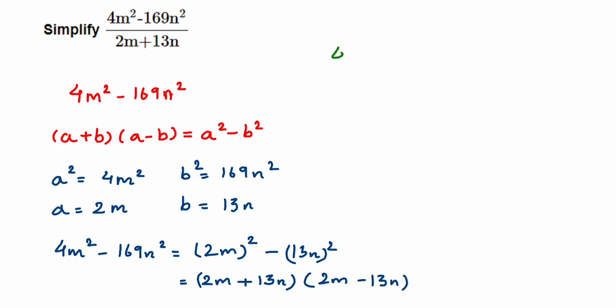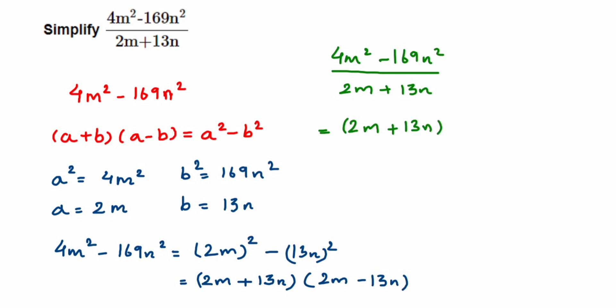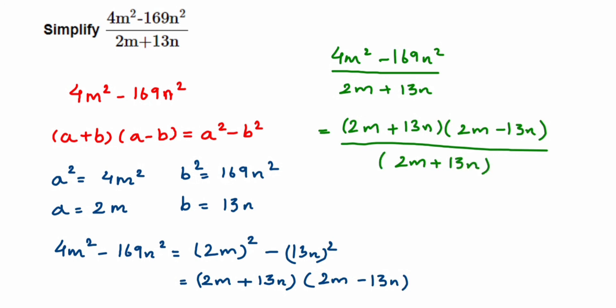Now substituting back into the question: (4m² − 169n²) / (2m + 13n) = [(2m + 13n)(2m − 13n)] / (2m + 13n). We can see that (2m + 13n) is common in both numerator and denominator, so we cancel them. We're left with 2m − 13n. That is the answer.